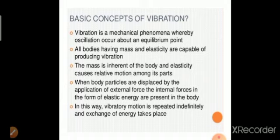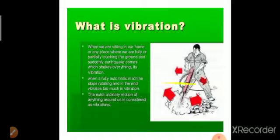The main cause of vibration is the internal molecular forces generated within the body, which try to reduce the external force applied. When body particles are displaced by the application of external force, the internal forces try to form elastic energy and deform the body back. Examples of vibration include an earthquake — when we are sitting at home and the ground shakes — or when a fully automatic machine vibrates excessively while trying to execute its motion.